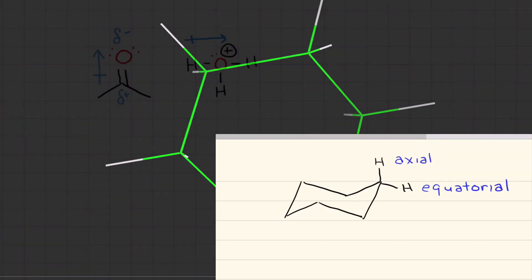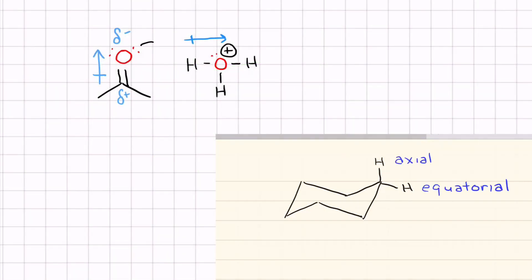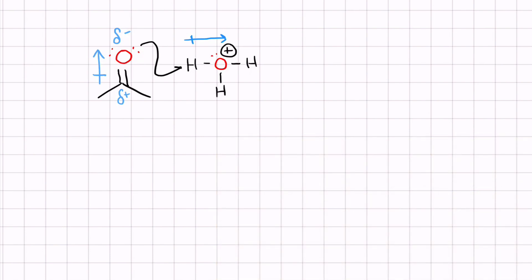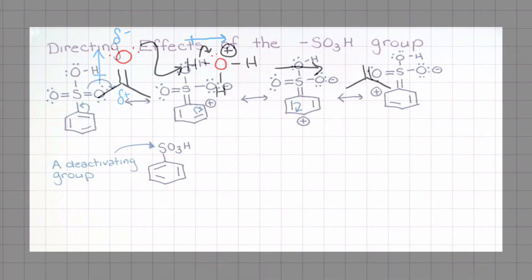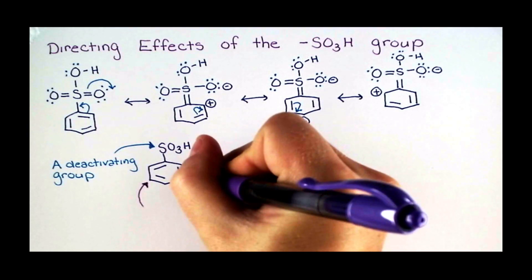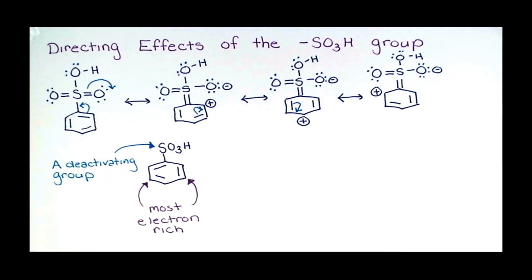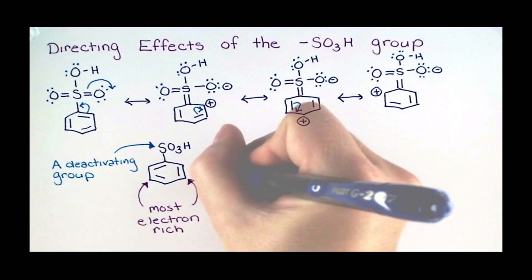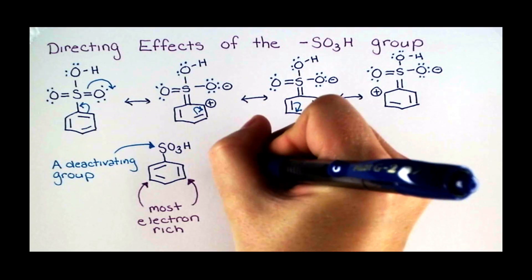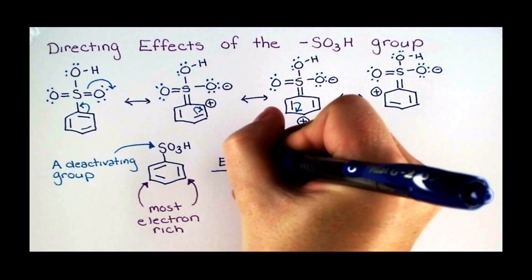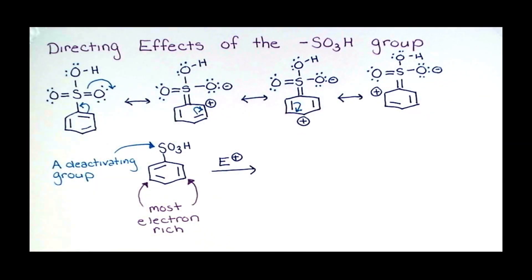We also need to recognize electron density hotspots on one part of the molecule and how those might interact with an electronically cold spot on another molecule to form a chemical bond. We also need to be able to show that process by drawing curved arrows that show where the electrons are moving.